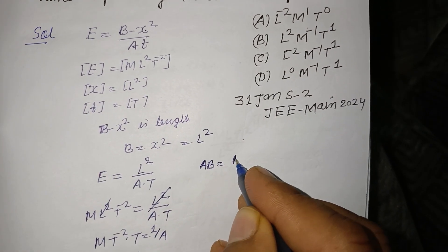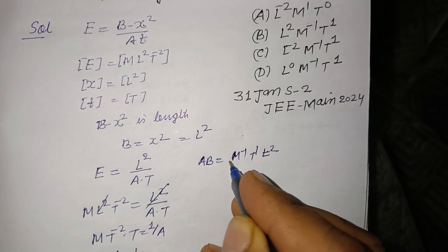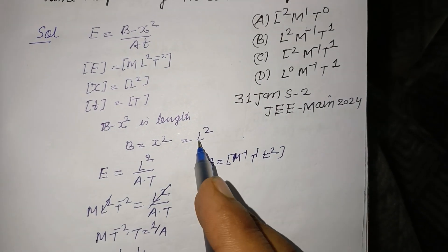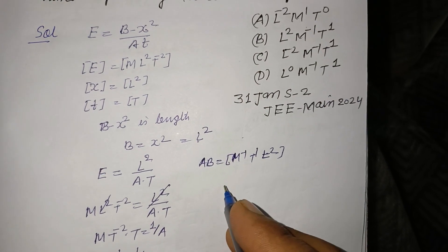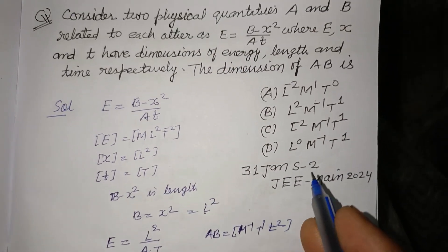Therefore dimension of AB equals M⁻¹T¹ into L². B is L², so this is dimension M⁻¹T¹L².